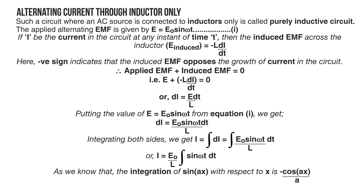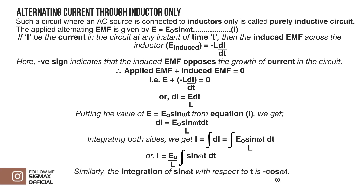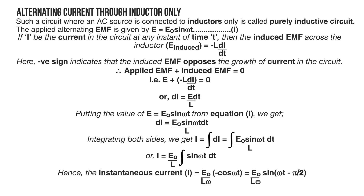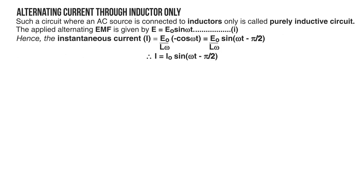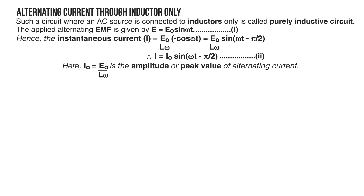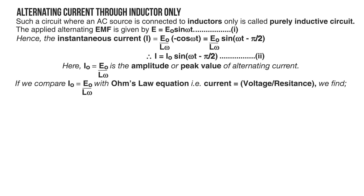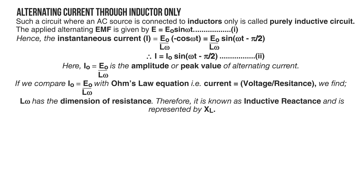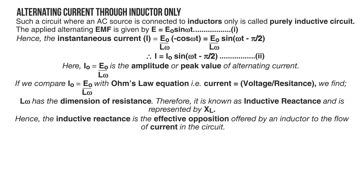Integrating, since E₀/L is a constant: I = (E₀/L) ∫sine(ωt) dt. Using the identity ∫sine(ax)dx = −cos(ax)/a, we get I = −(E₀/Lω) cos(ωt), which can be written as I = (E₀/Lω) sine(ωt − π/2), so I = I₀ sine(ωt − π/2) — equation 2, where I₀ = E₀/(Lω) is the peak current. Comparing with Ohm's law, Lω has the dimension of resistance; it is called inductive reactance, denoted X_L. Inductive reactance is the effective opposition offered by an inductor to the flow of current.